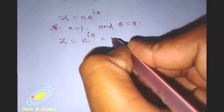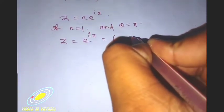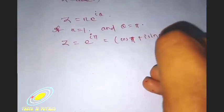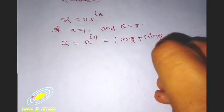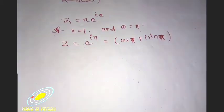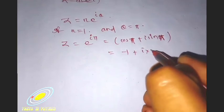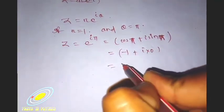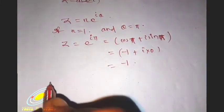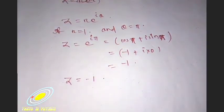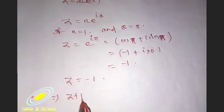Cos pi plus i sine pi. It will be minus 1, and sine pi will be 0, so i times 0, the answer will be minus 1. So I get that z equals minus 1. It means z plus 1 will be 0.